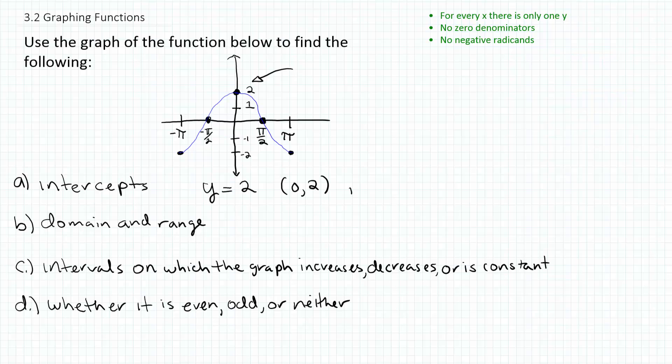Now for your x-intercepts, you're going to say that x is equal to negative π over 2 and x is equal to π over 2. Or in other words, the points plus or minus π over 2, 0. So those are two different points: positive π over 2, 0, and negative π over 2, 0.